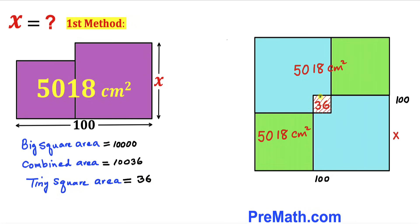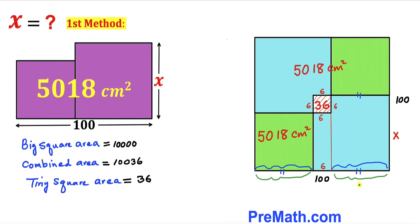The area of the tiny square is 36, so all its side lengths are going to be 6 centimeters. If this side length is 6 then this side length is 6 centimeters as well. Now, this side length equals this side length — let me represent this side length as lowercase a, so this side length is a as well. The whole length is then a plus 6 plus a, which equals 2a plus 6.